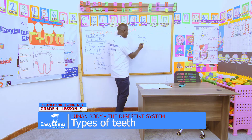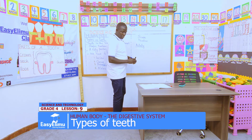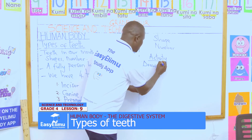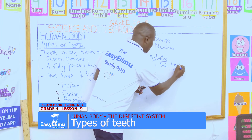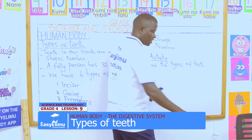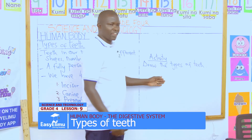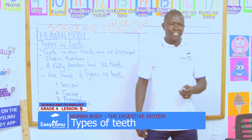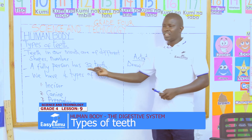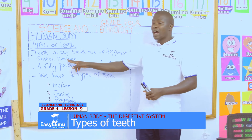Now, after you identify, our activity for today is: we draw the four types of teeth. In our books, let us draw the four types of teeth. Any question from you, John and Wangare? No question. Remember, we have said a fully grown-up human being always has thirty-two teeth. The teeth in our mouth are of different shapes, and even the number is not the same.